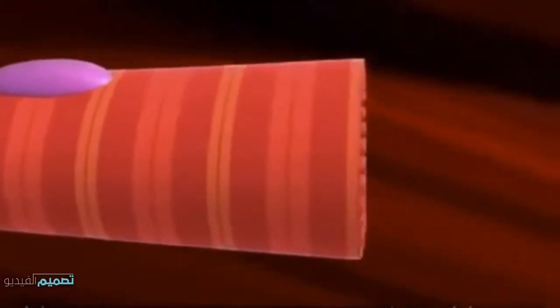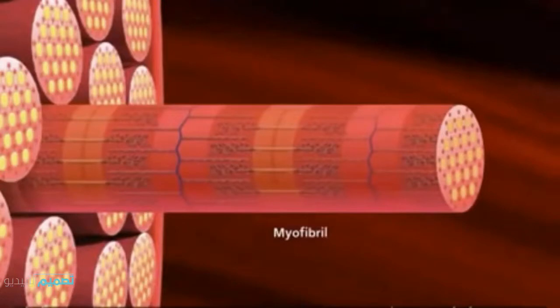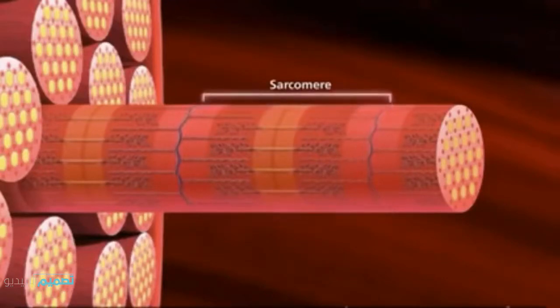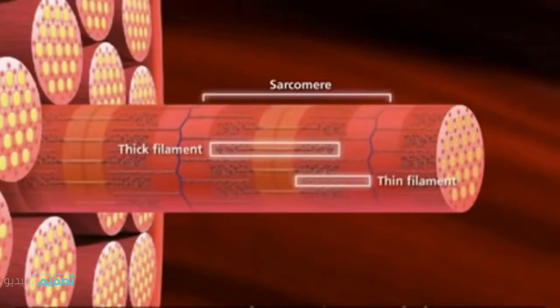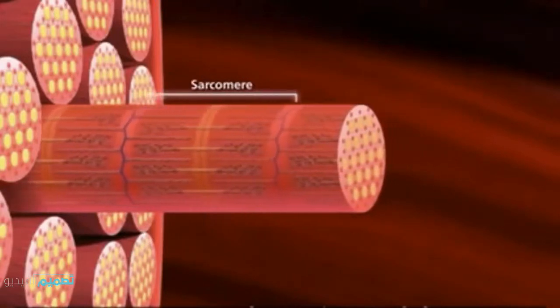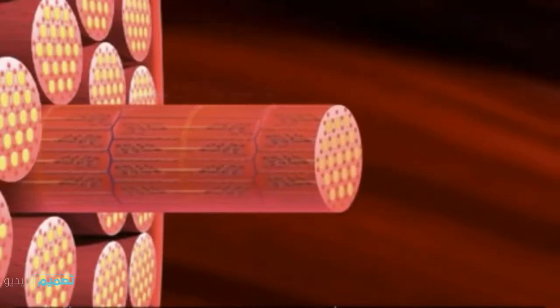Muscle fibers are composed of many myofibrils. A myofibril contains contractile units called sarcomeres. Sarcomeres run adjacent to one another down the length of the myofibril. Each sarcomere consists of alternating thick and thin protein filaments, giving skeletal muscle its striated appearance. The muscle contracts when these filaments slide past each other.